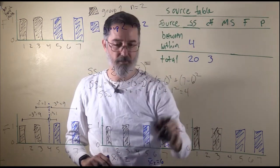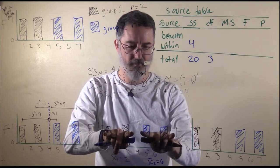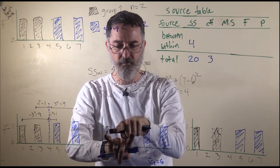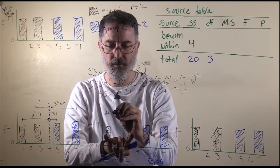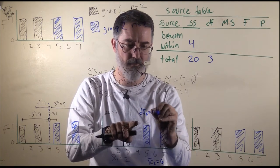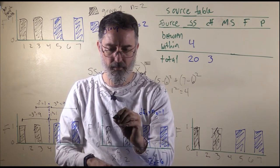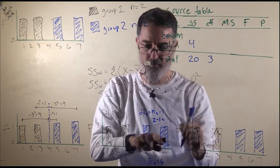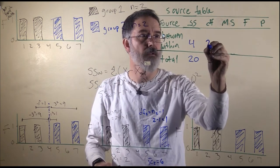For our degrees of freedom within, recall that we created a separate variance estimate for each group. Degrees of freedom for group 1 equals n1 minus 1, and degrees of freedom for group 2 equals n2 minus 1. There are 2 in group 1, so 2 minus 1 equals 1; and 2 in group 2, so 2 minus 1 equals 1. So our total degrees of freedom within is going to be 2.